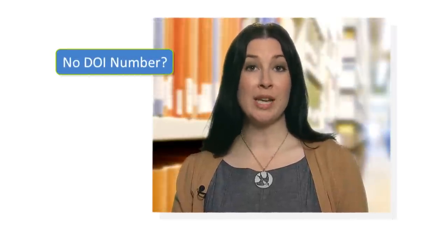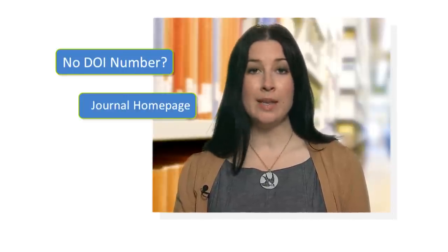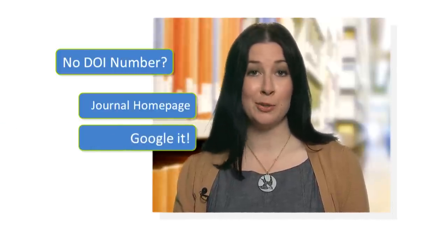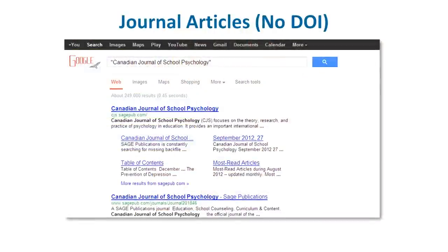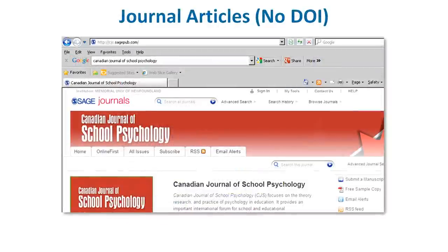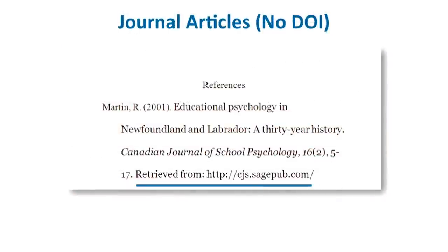But what if there's no DOI number given? In that case, APA suggests providing the URL for the home page of that journal. Don't just copy and paste a direct link to the article itself. This is one time when a librarian will actually tell you to use Google — google the name of the journal, and it's helpful to put quotation marks around it. After the page numbers, type "retrieved from" and paste the URL of the journal's home page. The URL should not be hyperlinked or underlined; it should be in the same font as the rest of the reference.